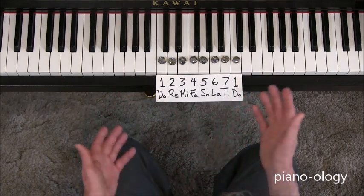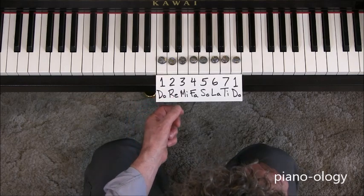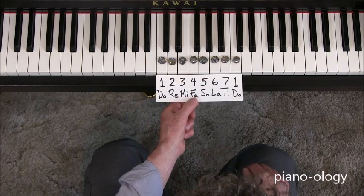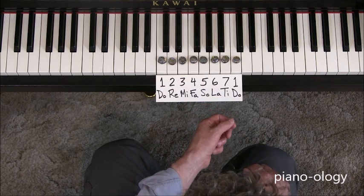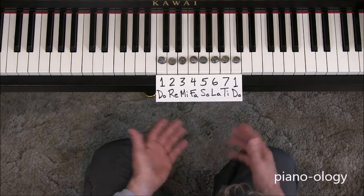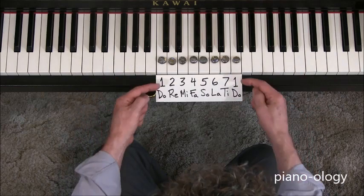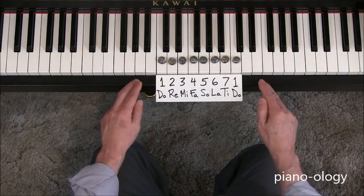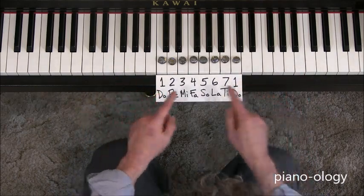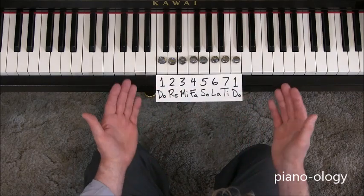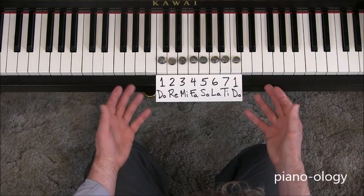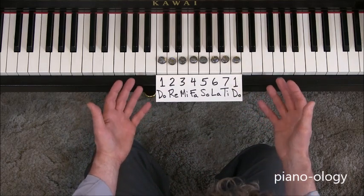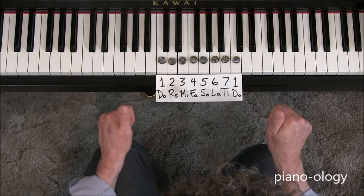And instead of the solfege syllables, we could have said Lucy, Ricky, Fred, Ethel, Ozzie, Harriet, Bert and Ernie. So that's the key point. Names are always arbitrary. There is nothing magical or special about any of these names. They are just commonly used conventions that allow us to communicate with each other using the left side of our brains.